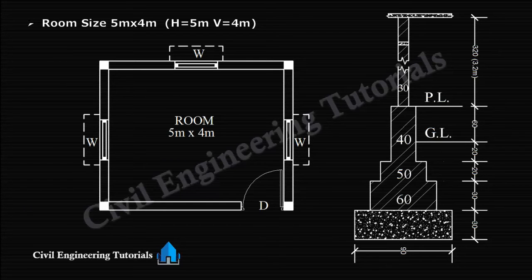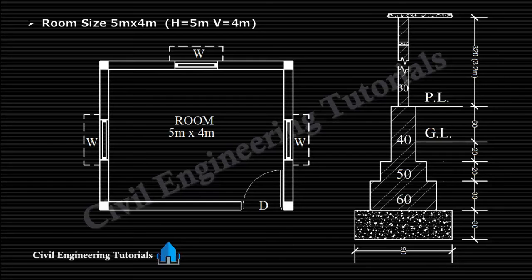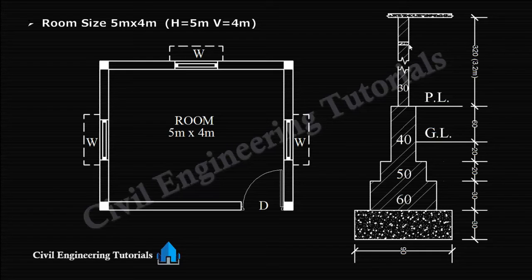This is the single room estimate — Part 2. The room size is 5 meter by 4 meter, where 5 meter is the horizontal length and 4 meter is the vertical length. This is the section of footing with brick masonry footing and PCC of 90 centimeters. The lintel slab thickness is 0.1 meter, and the height from plinth level to roof slab level is 3.2 meter. The total center line length is 19.2 meter, already calculated in the previous video.